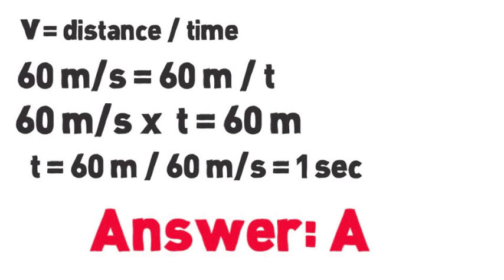So it takes one second for the particle to go from 100 meters per second to 20 meters per second at a distance of 60 meters. So the correct answer is A.